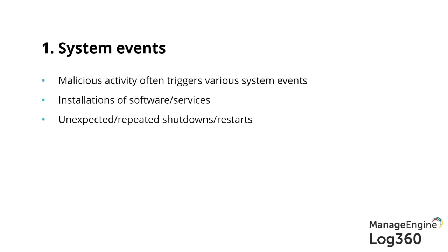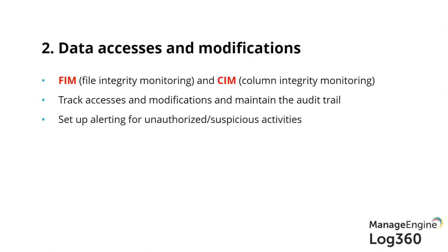Why aren't we tracking things we know are not supposed to happen? If we know a service installation is not supposed to happen on a critical server, we should be tracking it so that when it does happen, we know something is up. Exactly — you need a security baseline in place. When there's a deviation from that baseline, it must be brought to the notice of the incident handling team in real time. When something like adding a user to enterprise admins happens — which is not supposed to happen — we need to be notified.